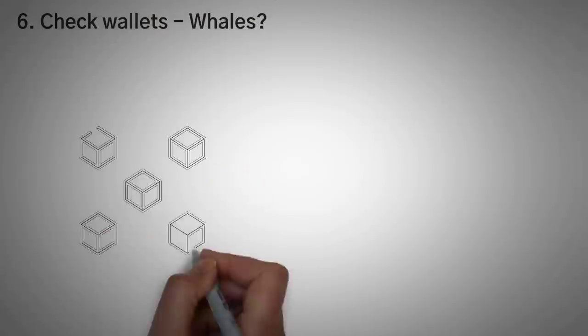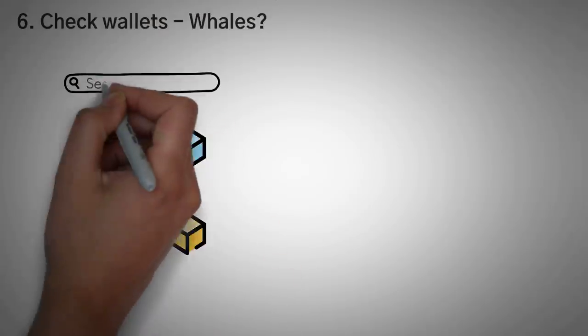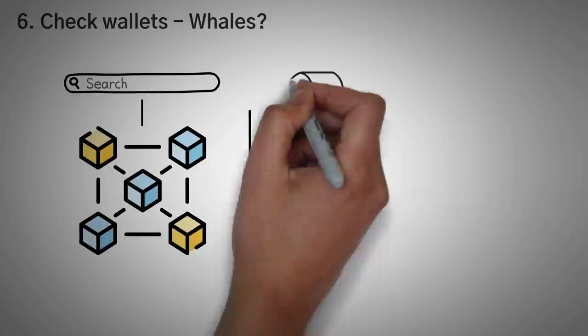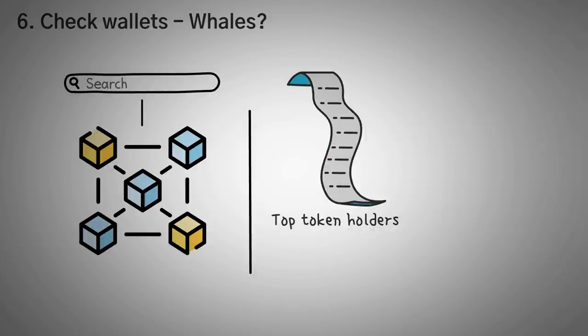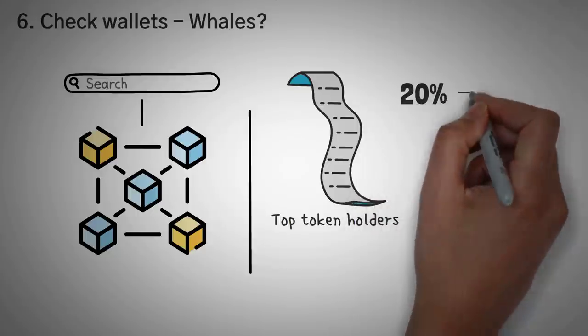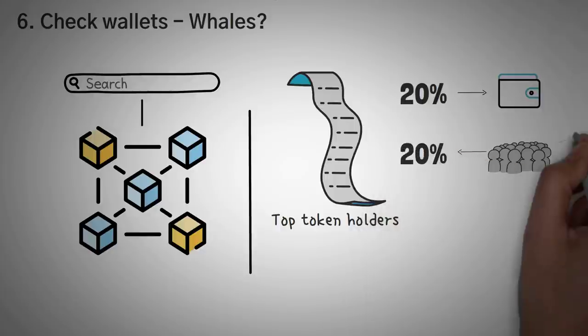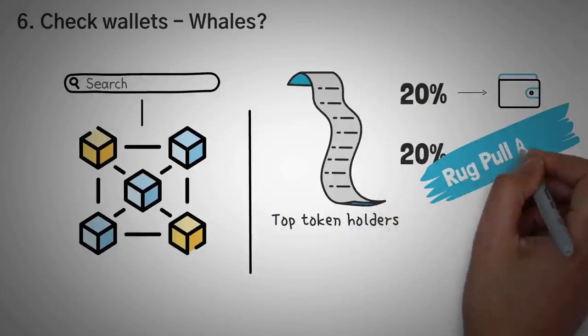Number six is to check the wallets. Here's some advice that you might actually use a blockchain explorer for. Most explorers for the Ethereum or Polygon or Binance Smart Chains will let you look at all the tokens out there. Pop in your token address and you can actually see a list of all the top token holders who hold that token. If more than 20% of all tokens are held by one wallet, or even if the top ten wallets hold more than 20% combined, you could be getting rugged.